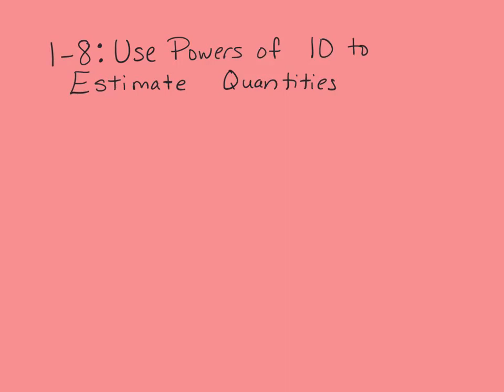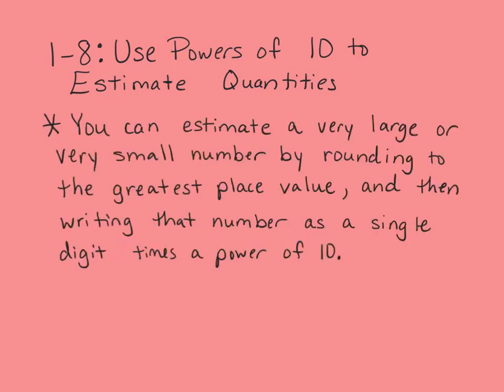We're going to be talking about powers of 10 in the next three lessons. This is leading into scientific notation, which is just another way to write very large or very small numbers. You can estimate a very large or very small number by rounding to the greatest place value, and then writing that number as a single digit times the power of 10.